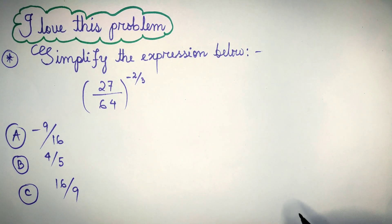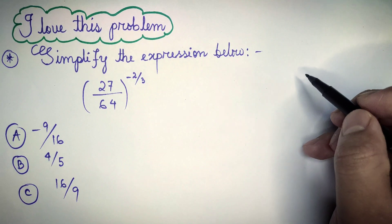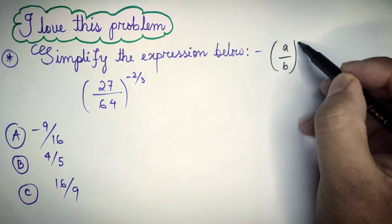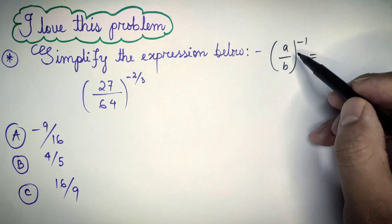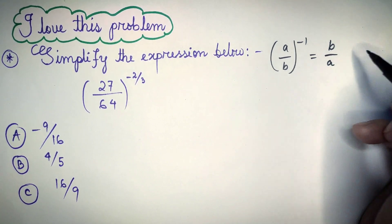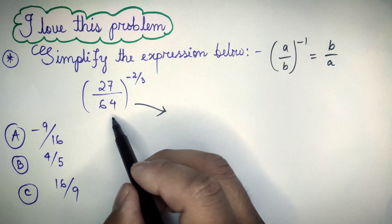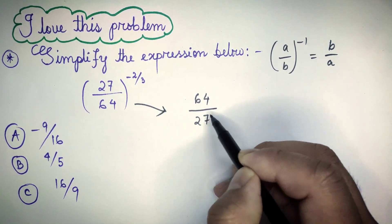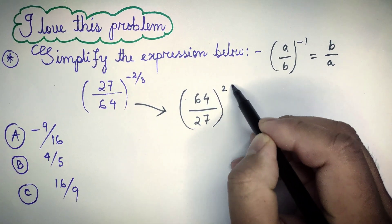First of all, we have already known the formula, that is A by B to the power minus 1 is equal to B by A. Using this formula in this fraction, we will be flipping this fraction, that is 64 by 27 to the power 2 by 3.